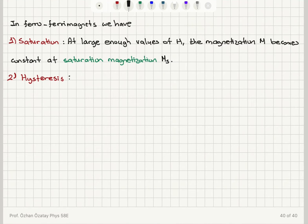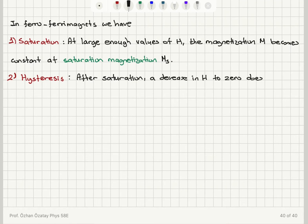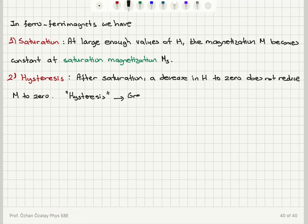The second phenomenon is hysteresis. After saturation, a decrease in the magnetic field H back to zero does not reduce the magnetization to zero — we need more field, more negative field, to reduce it back to zero. This behavior is called hysteresis, which is a Greek word for 'lag behind.'